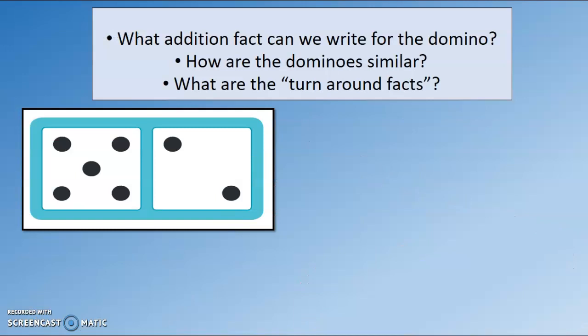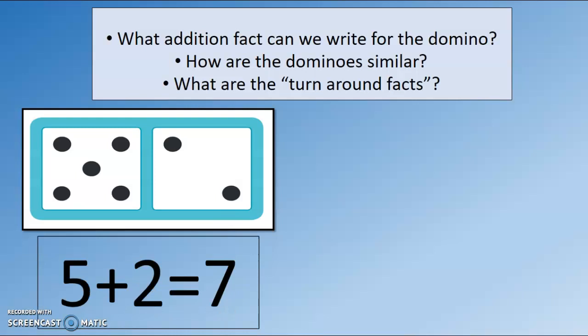Now we're going to take a look at dominoes and try to do some turnaround facts with dominoes. And if you have any at home, you can get some out and try it after I finish teaching this lesson. Take a look at this first domino — what addition fact could we write for it? Tell your home teacher. Did you say five plus two equals seven? Fantastic. Because this is a group of five and this is a group of two, and when we add them together the total number of dots is seven. Five plus two equals seven: one, two, three, four, five, six, seven.